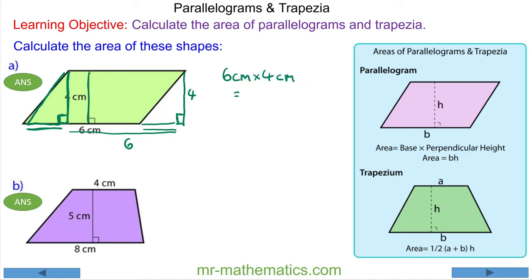Which is 24 centimeters squared. For question B, we've got a trapezium. To calculate the area of a trapezium, we're going to double it. What I mean by this is we're going to copy this trapezium here and we're going to flip it around and put it on the end.